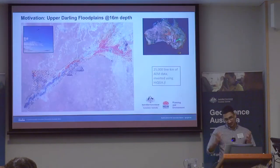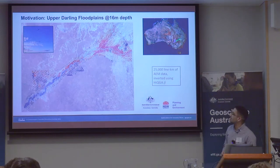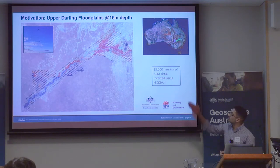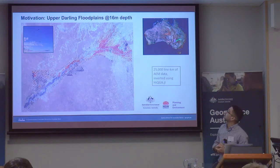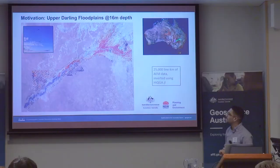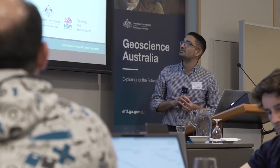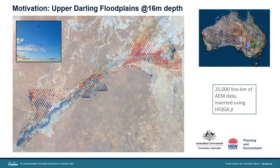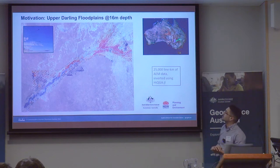The motivation for all of this is really that you want to get fantastic images like this. You want to be able to image down the diagonal — that's about 500 kilometers or so. This is the survey that is our pride and joy right now. It's about 30,000 line kilometers of data. You're looking at layer eight, about 16 meters deep in the earth. You just don't have this kind of resolution of conductivity from satellite data. It is an AEM survey, and this is good for us and our partners in the Department of Planning and Environment, NSW.